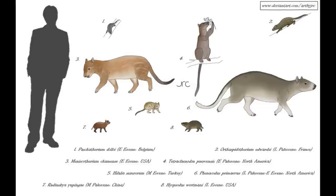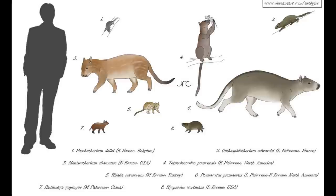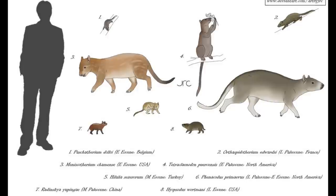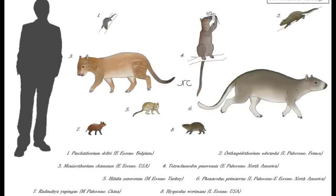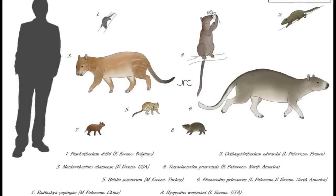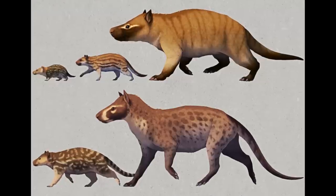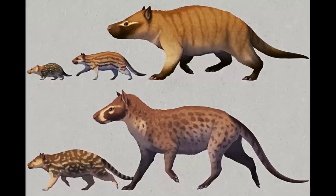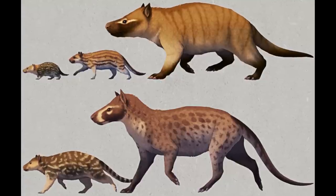On the other hand, stem perissodactyls started out as omnivores, or even insectivores in some cases, but quickly transitioned into full-time herbivory, with the odd-toed ungulates producing very few omnivorous species, with horses, rhinos and tapirs being almost entirely herbivorous. While the condylarths were often very successful in their own time, by the end of the Eocene they had essentially been superseded by their more specialised hoofed relatives. However, they stand as a testament to the sheer adaptability of early placental mammals that thrived in the aftermath of the KPG extinction event, going from rat-sized omnivores to multi-ton herbivores within the span of 20 million years.